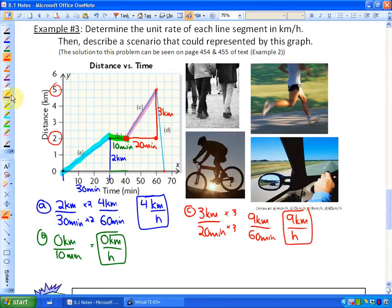And the final scenario which we'll do in yellow and orange. It's a steep line so you could assume that it's going pretty quickly. In this case the time is from 60 minutes to 65 minutes, so that's just five minutes long. And the distance is from five kilometers all the way back down to zero. So the distance is five kilometers.